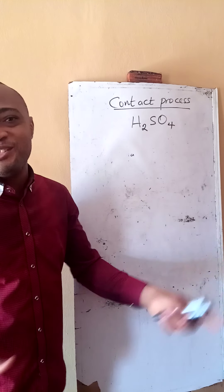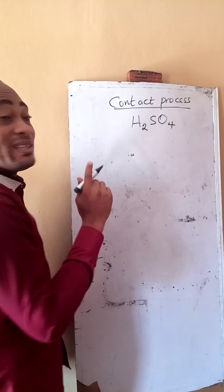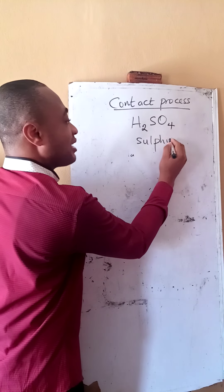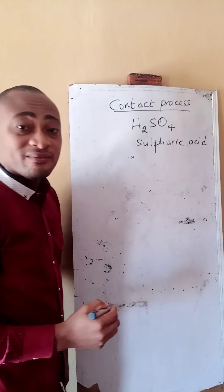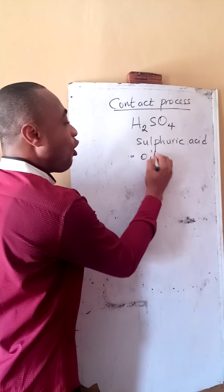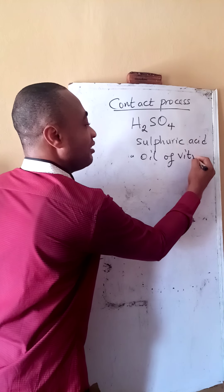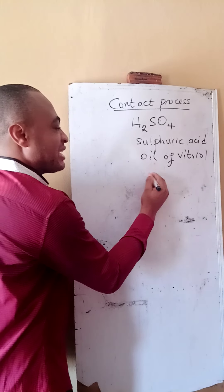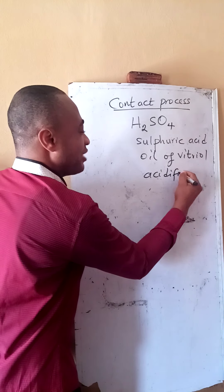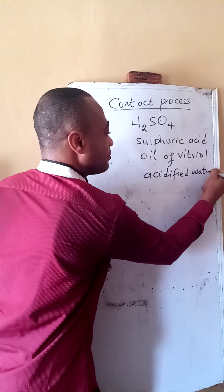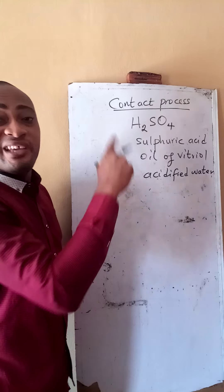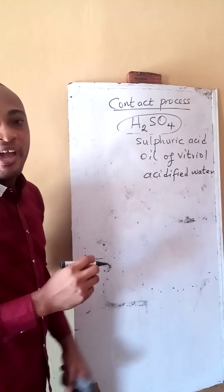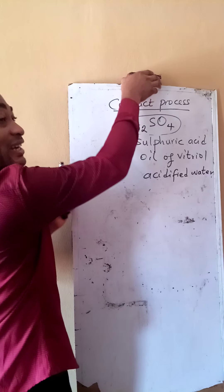Our H2SO4 comes in a variety of names. We call this tetraoxosulfate six acid, we can also refer to this as sulfuric acid. This can also be called the oil of vitriol, and of course we can also refer to this as acidified water.